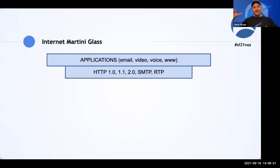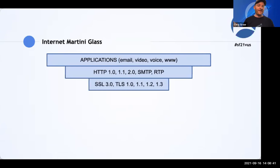Below those applications, to secure them, there's also been development in core application protocols. We've had SSL starting out at 1.0, then 2.0, then 3.0, then TLS starting to take over — TLS 1.1, 1.2, 1.3. Things have been cooking along for transport layer security. There's been a lot of development there. But then we kind of hit this sticking point — TCP and UDP, sitting on top of IP, have been pretty stale at the transport layer for several years.